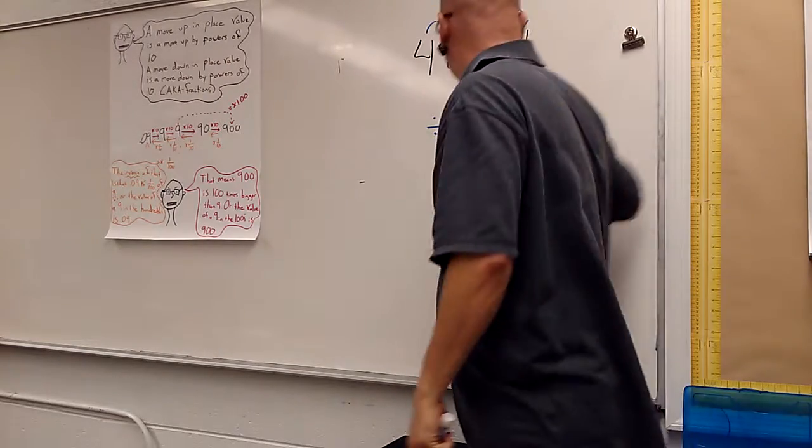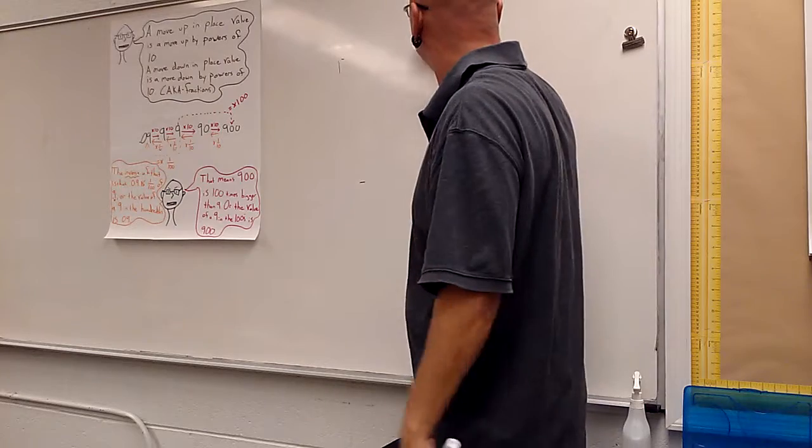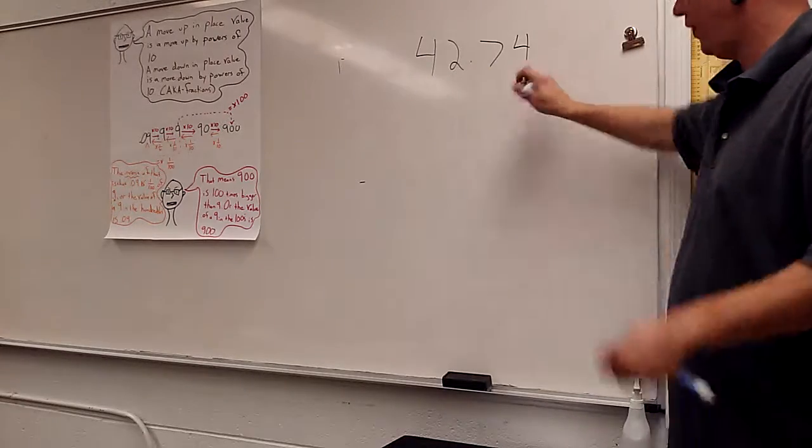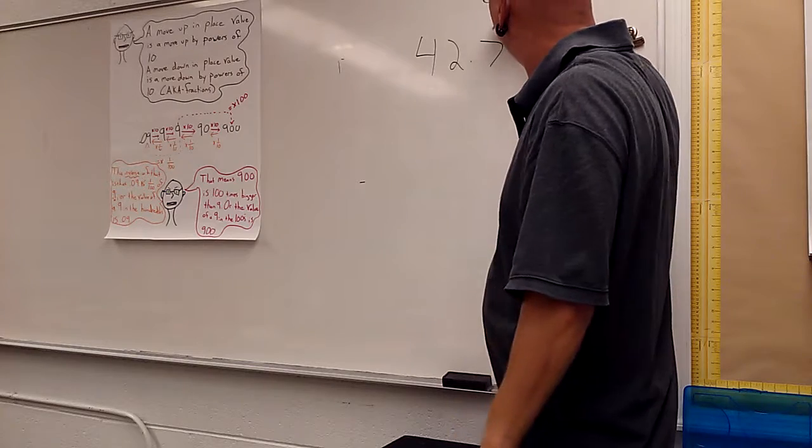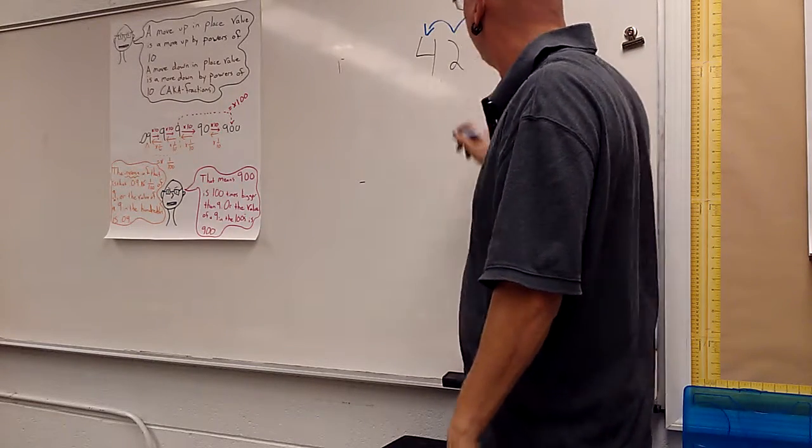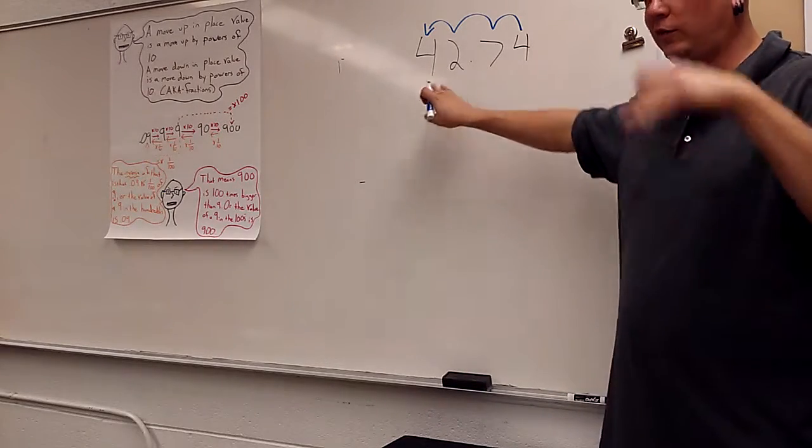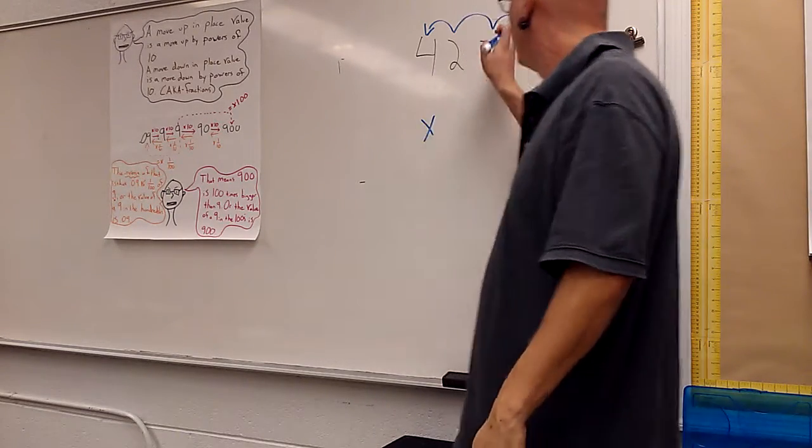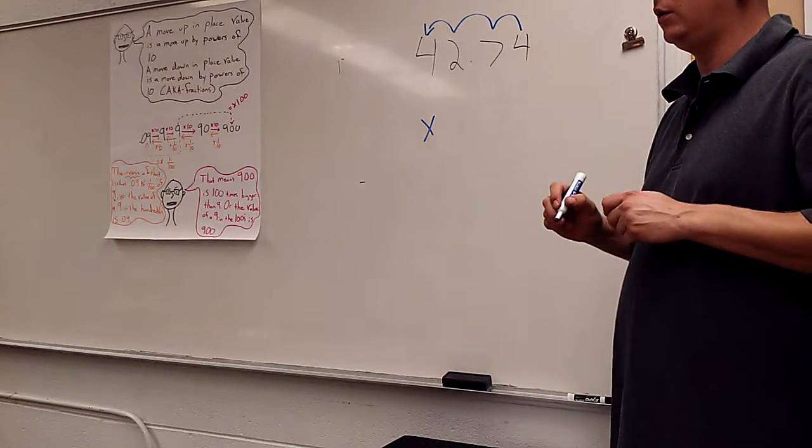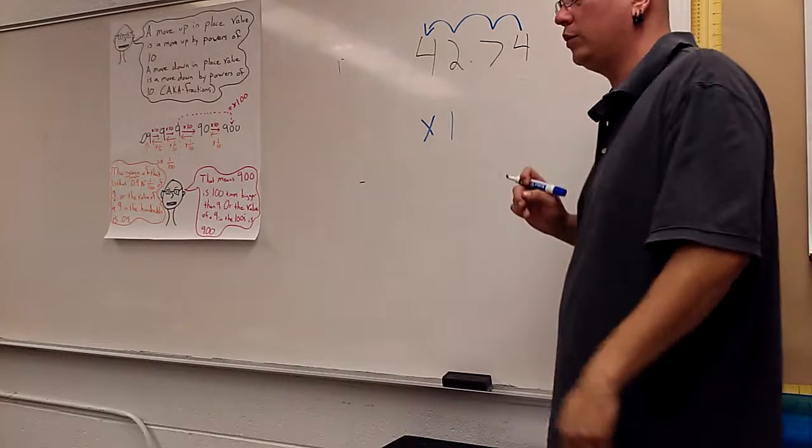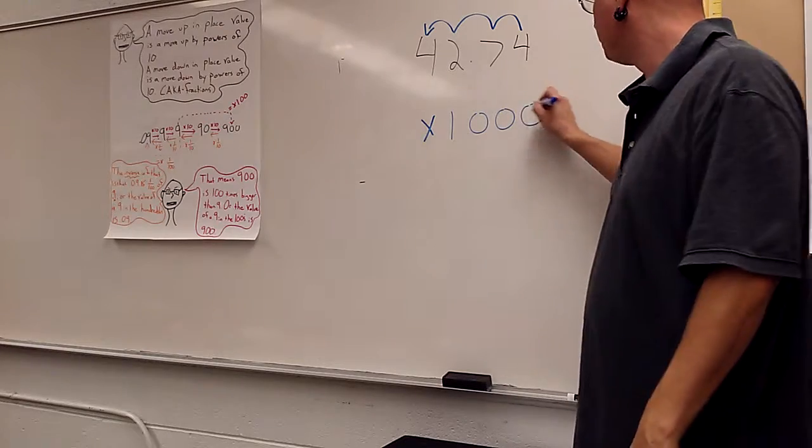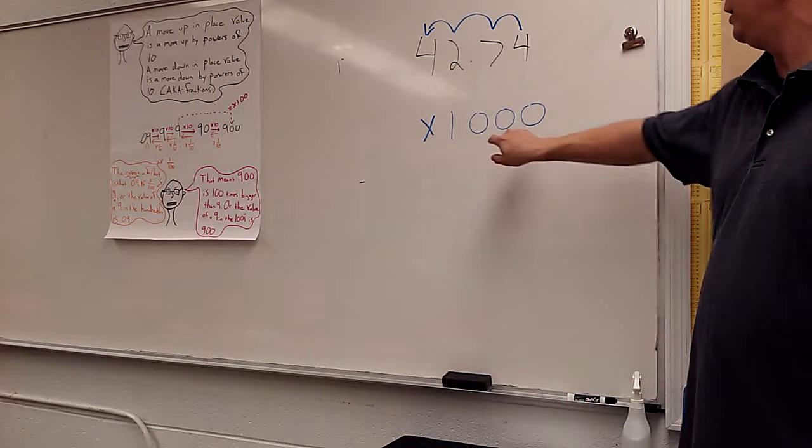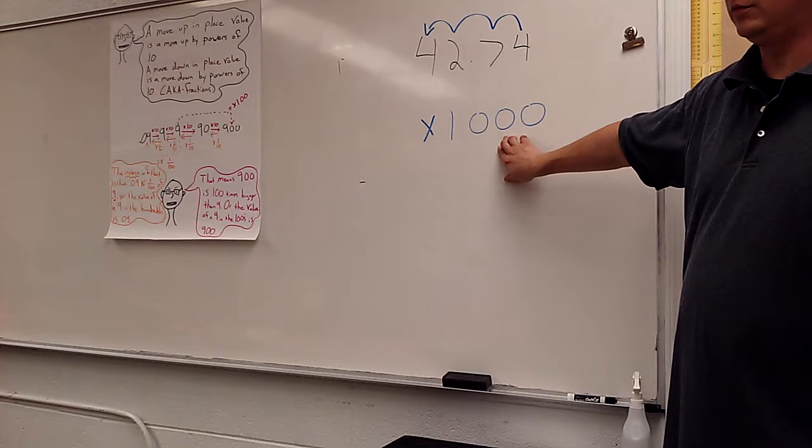And if we're going to work the opposite way and raise the place value, if we were to say, how much bigger is this four than this four? It just works the opposite way. One jump. Two jumps. Three jumps. If we're going to increase the value of this, is it multiplication or division? Multiplication. How many bumps? How many zeros is that following my one that holds this place value? Three. If you're a math teacher, you're going to say a movement of three place values. If you're a math student, you're going to say three zeros.